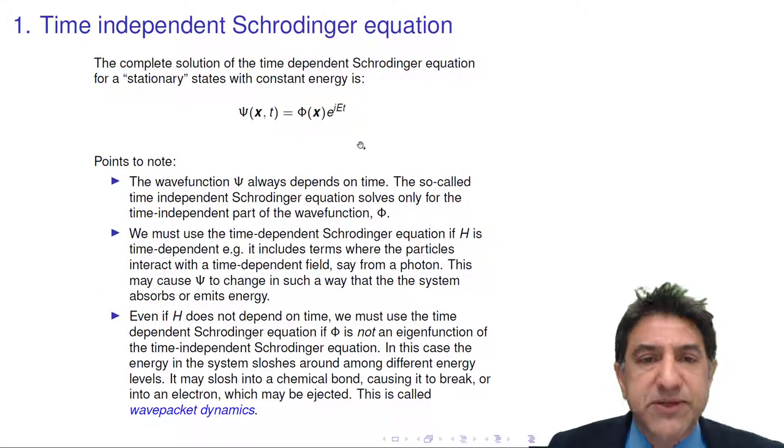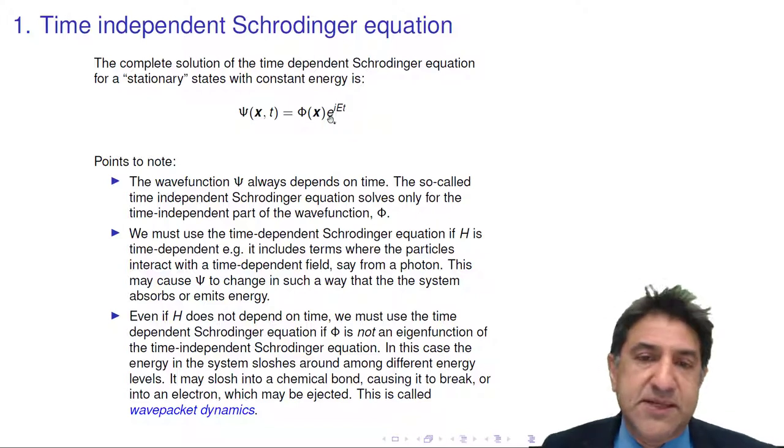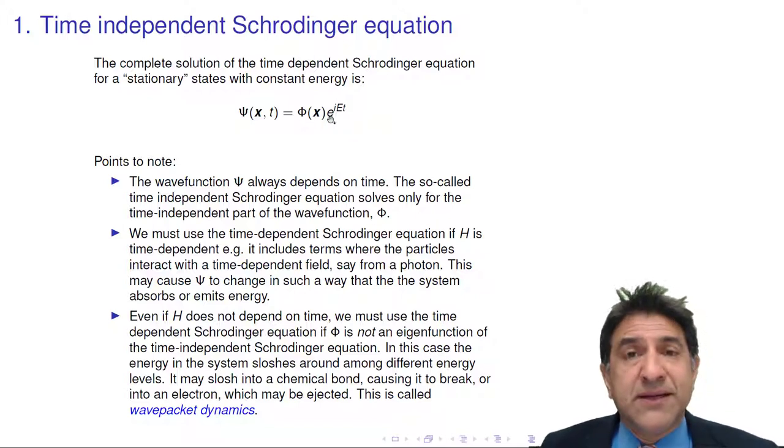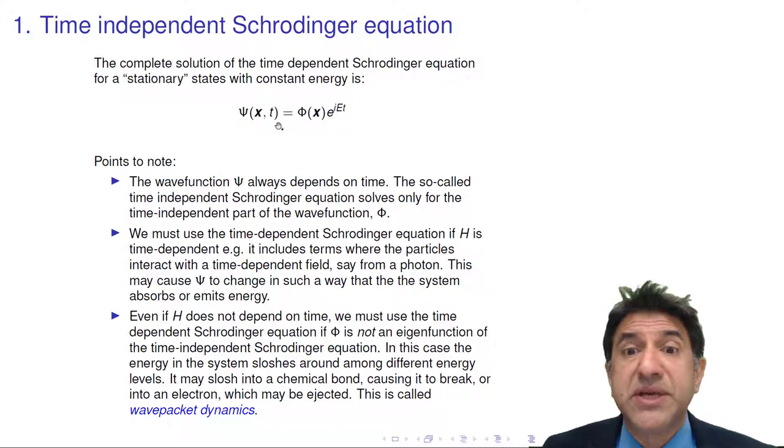So assuming the Hamiltonian doesn't depend on time, the wave function looks like this: a coordinate part depending on space and spin coordinates, and a time part. Now what do we notice? The wave function always depends on time. ψ always depends on time. The so-called time-independent Schrodinger equation only solves for this part of the whole wave function. But there's always this oscillatory part in the wave function, even when the Hamiltonian doesn't depend on time.